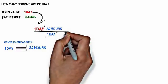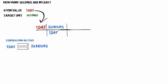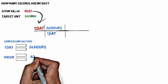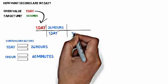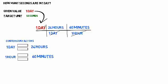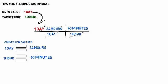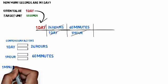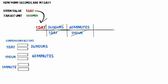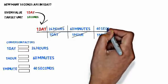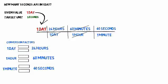We extend this with another section and another conversion factor. Since we're in hours and trying to get to seconds, we convert hours: one hour is equivalent to 60 minutes, so one hour goes in the denominator and 60 minutes in the numerator — the hours cancel, leaving us with minutes. But our target is seconds, so we do yet another conversion: one minute equals 60 seconds, with minutes in the denominator and 60 seconds in the numerator, canceling out the minutes.